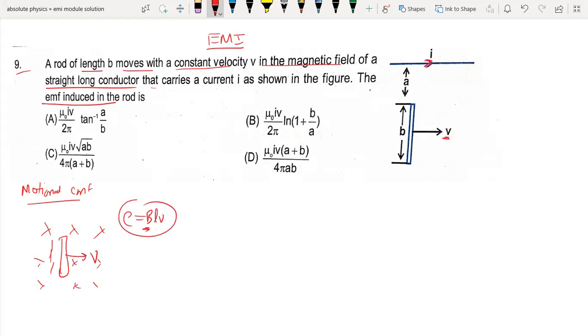The wire creates a field where B is mu naught I upon 2 pi x. So the field here and at this segment has different values. This means that we have to do integration.